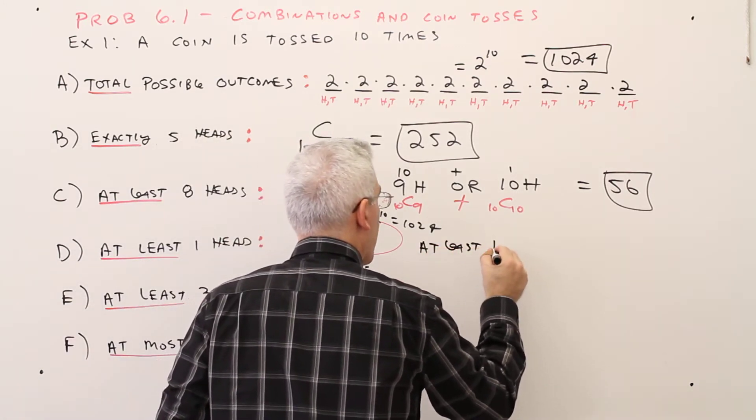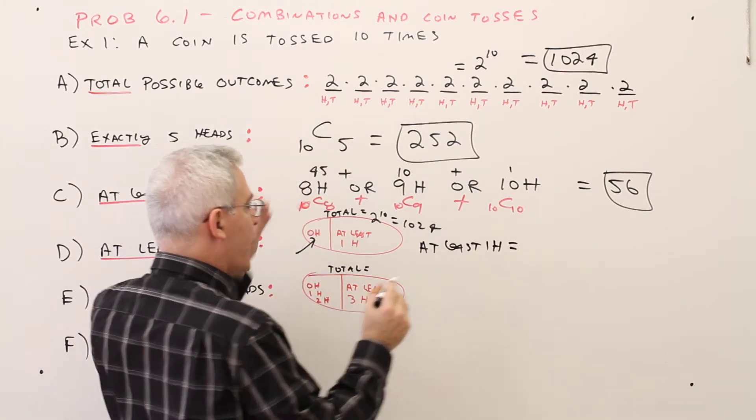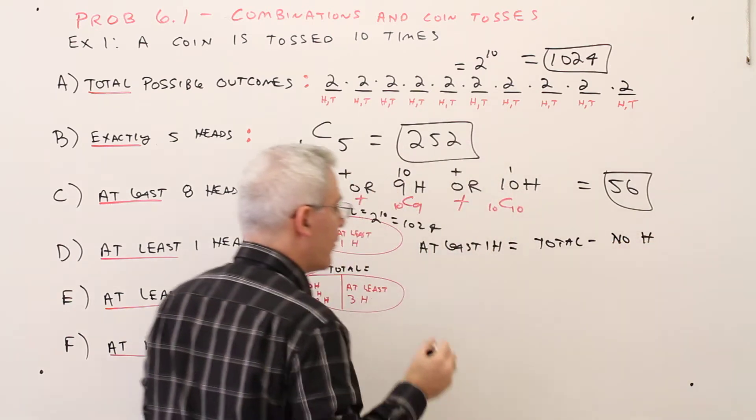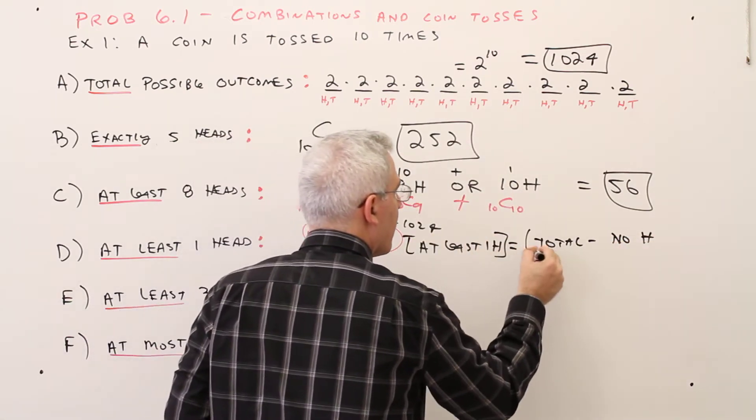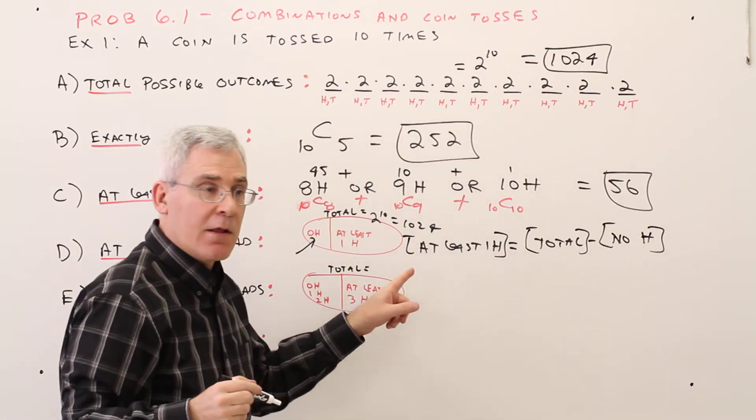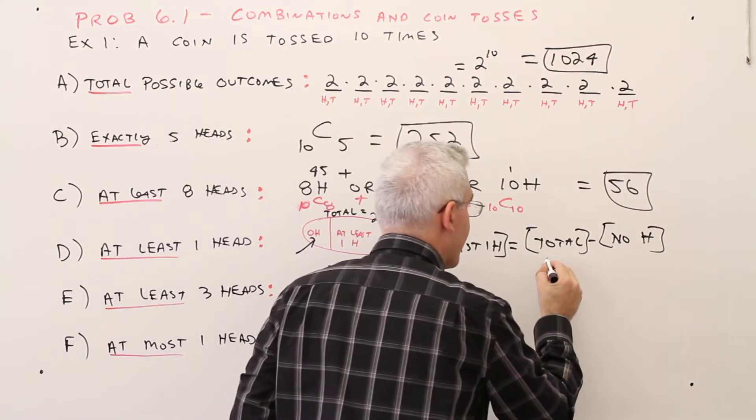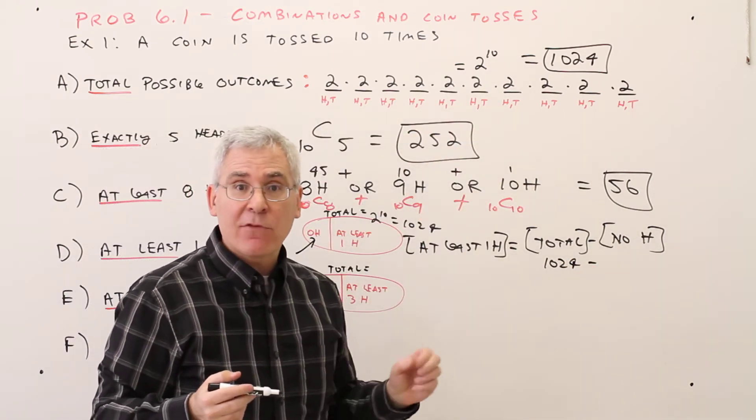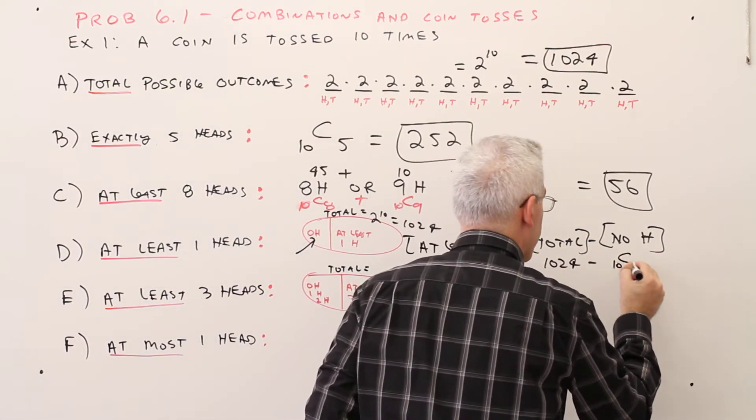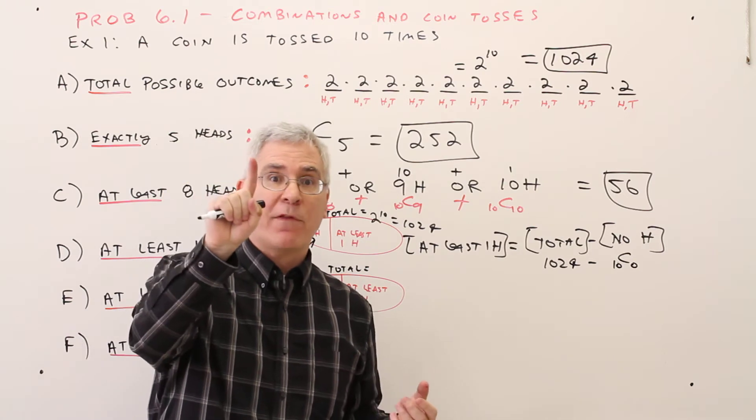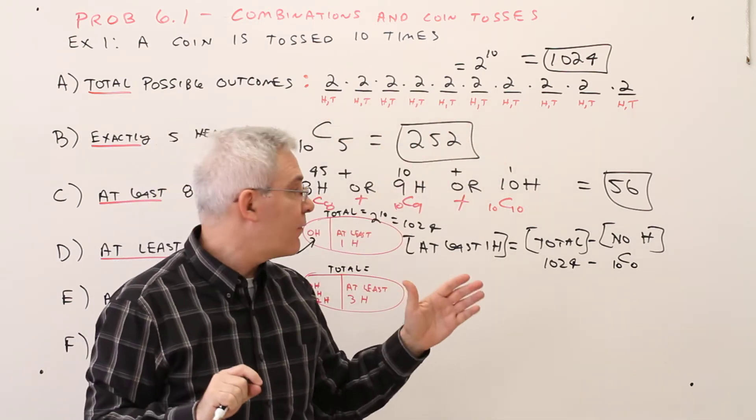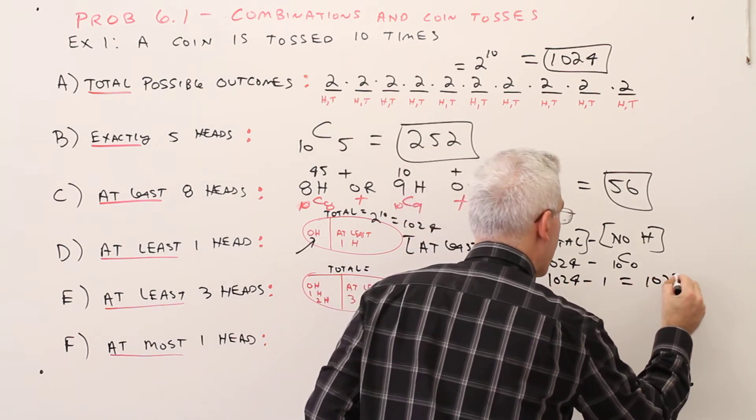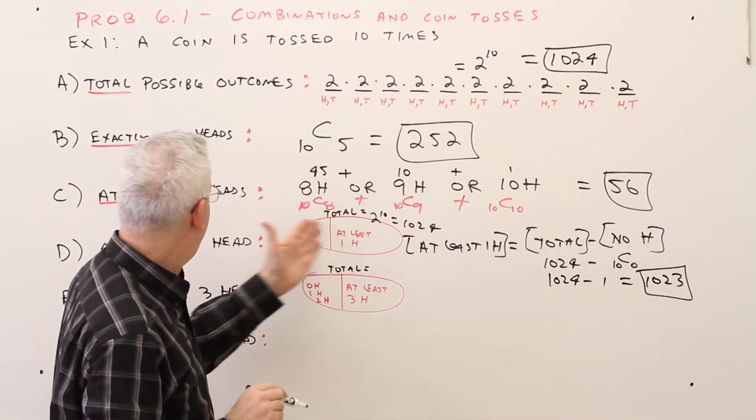So it's easy for me to find this part, so I'll use subtraction like we did before. At least 1 heads is the same as the total minus no heads. So at least 1 heads equals the total 1024 minus no heads. No heads would be out of the 10 slots choose 0. And of course you should know there's only one way for that to happen, to have everything be tails. So it's going to be 1024 minus 1 equals 1023, and that's the answer for part D.